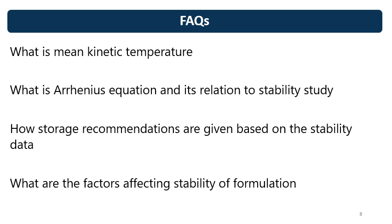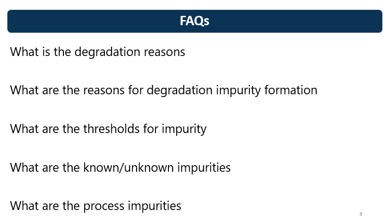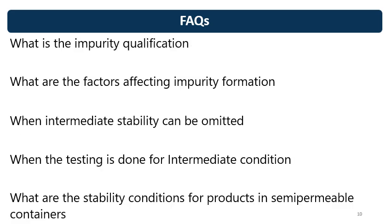How are storage recommendations given based on stability data? What are the factors affecting stability of the formulation? What is the degradation process and what are the degradation reasons? What are the reasons for degradation impurity formation? What are the thresholds for impurity — a very favourite interviewer question. There are three thresholds: reporting threshold, identification threshold, and qualification threshold. Based on these thresholds, impurity specifications are given. What are known and unknown impurities, process impurities, degradant impurities, and process-plus-degradant impurities?